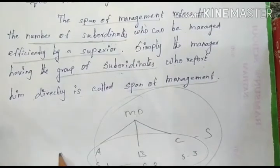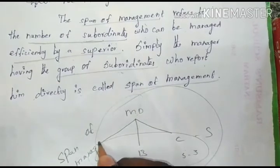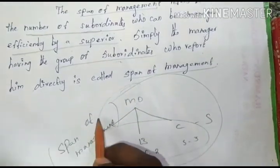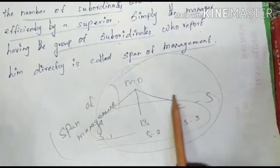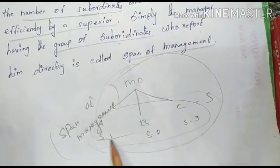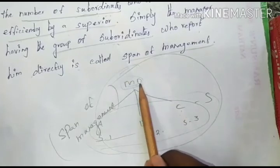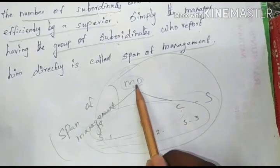We can talk about the span of management in this structure. The full structure represents the span of management. In this structure, A, B, and C are called subordinates — every subordinate works under the MD, who is the real owner of the company.